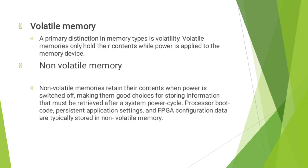A primary distinction in memory types is volatile versus non-volatile. Volatile memories only hold their content while power is applied to the memory device. Non-volatile memories retain their contents when power is switched off, making them good choices for storing information that must be retrieved after a system power cycle.